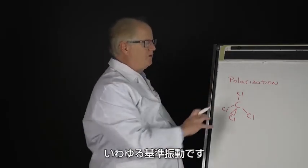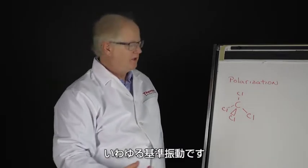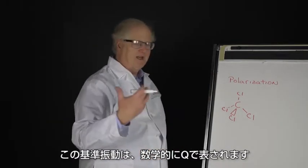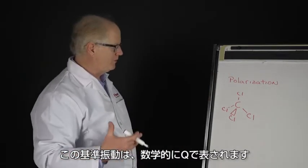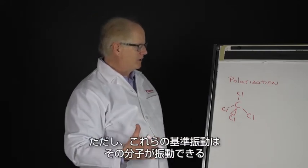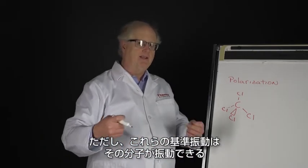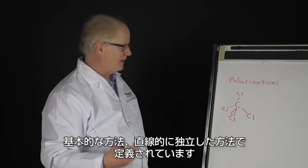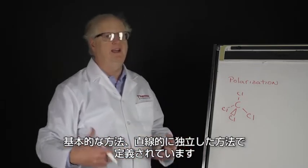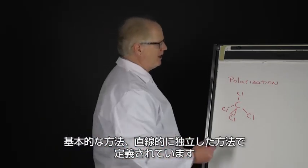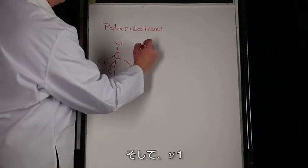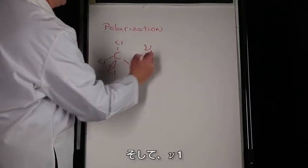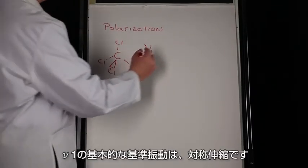That molecule can move in what are called normal modes. Those normal modes are represented mathematically by Q if you're looking in the literature. Those normal modes define the basic ways—the linearly independent ways—in which that molecule can vibrate. ν1, the basic normal mode...